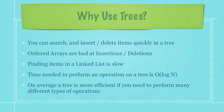So why should you use a tree based off of all the other different data structures we've seen? Well, you can search, insert, and delete items quickly in a tree. As we've seen in the past, ordered arrays are bad at insertions as well as deletions. And with linked lists, finding items is quite slow. The Big O notation for a binary tree would be O(log n), which is pretty quick. On average, a tree is more efficient if you need to perform all of the different types of operations quickly.